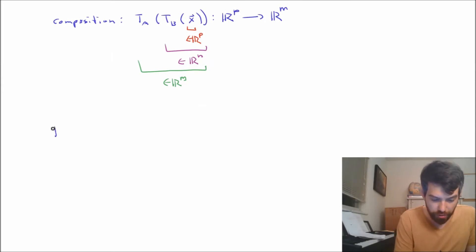What I want to do is I want to take this composition, this T_A of T_B of vector x, and I want to try to manipulate it. I want to try to understand it a little bit better. The first thing I'm going to note is that the T_B and the T_A are matrix transformations in their own right.